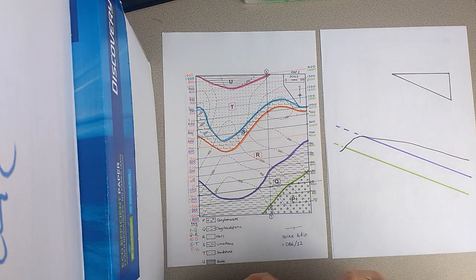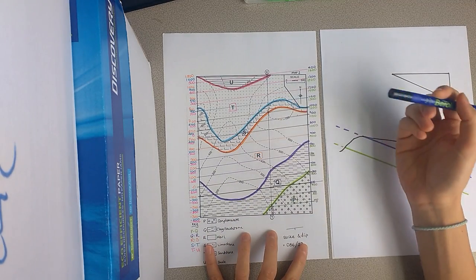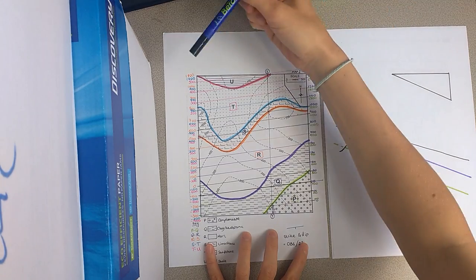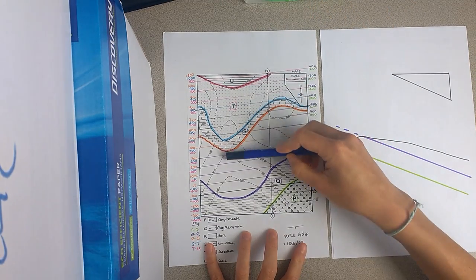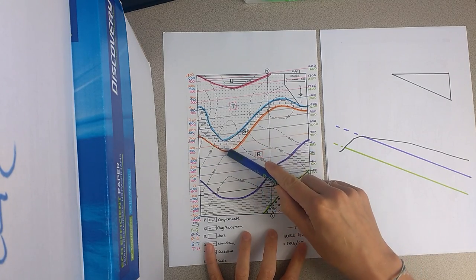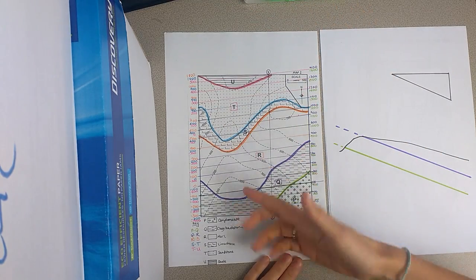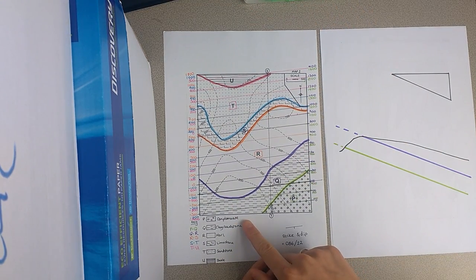Okay, so what we are looking at when we see this map, this is map 2, you might remember. We have the high ground up here and then we have a valley going down to the low ground. And you can see from the rule of V's that all of these units are dipping down to the bottom, the south of the map.